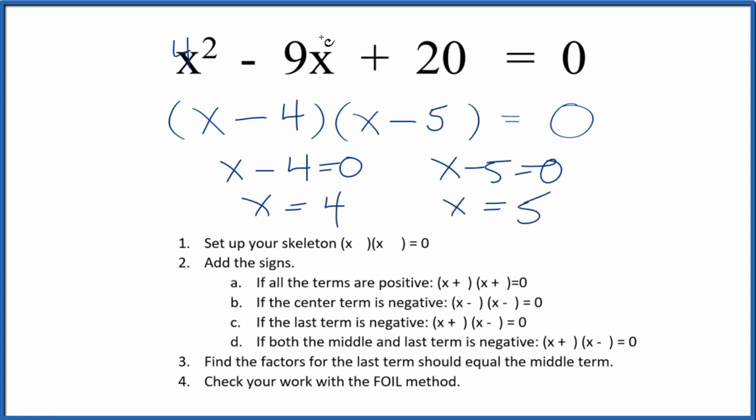If you put 4 in for x and you solve this equation, all of this would equal 0. Likewise, if you put 5 in for x and solve the equation, all of this here on the side would equal 0. So we did this correctly.